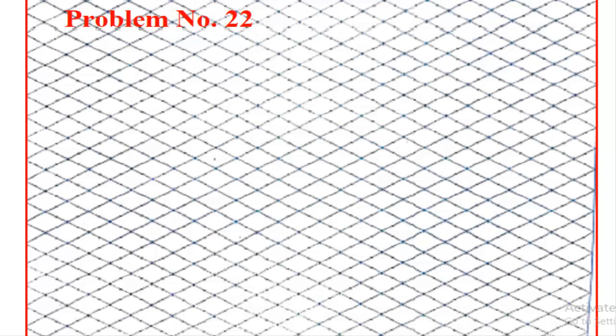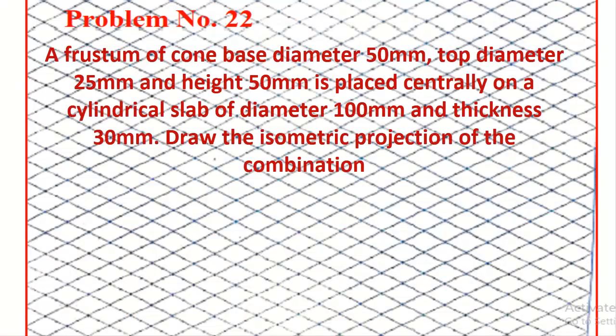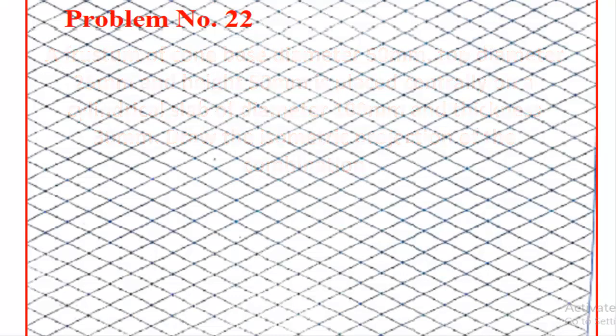Let me discuss problem number 22. The question is given like this: a frustum of a cone with base diameter 50 mm, top diameter 25 mm, and height 50 mm is placed centrally on a cylindrical slab of diameter 100 mm and thickness 30 mm. Draw the isometric projection of the combination. So here we have two objects — the first is a cylindrical slab at the bottom, and on top of that we need to place the frustum of a cone.